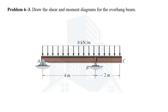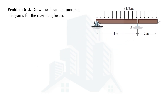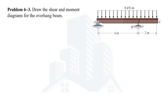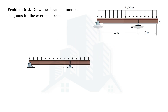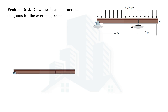Welcome everyone. Today we are going to solve another problem related to shear force and bending moment diagrams. This is problem number three from chapter six, 'Bending,' from the book Mechanics of Materials by RC Hibbeler. In this problem, we are being asked to draw those diagrams for an overhanging beam, which is shown in the figure.